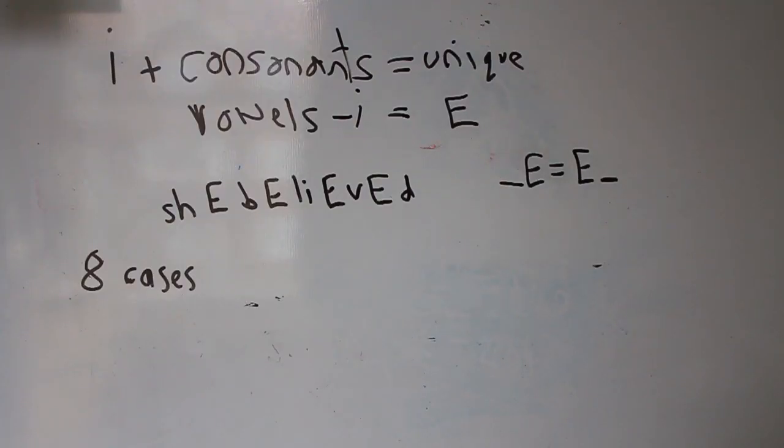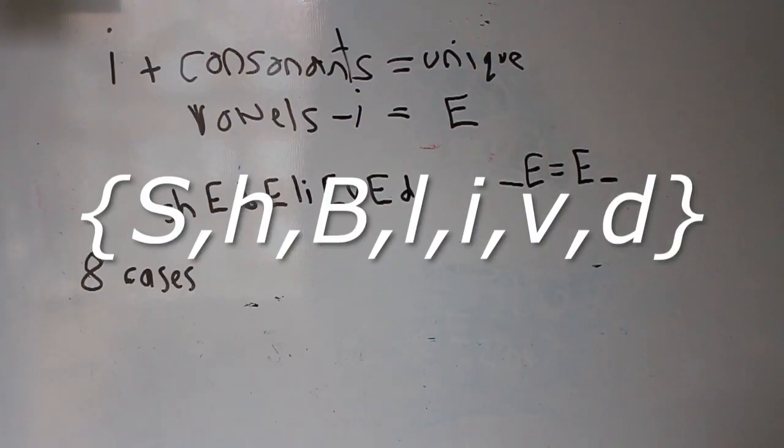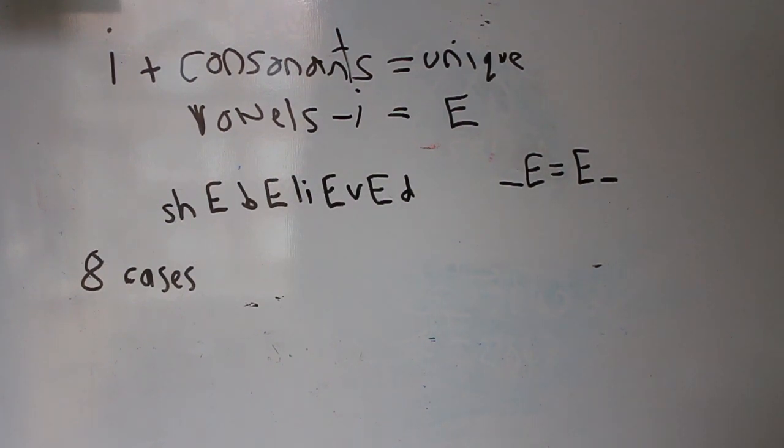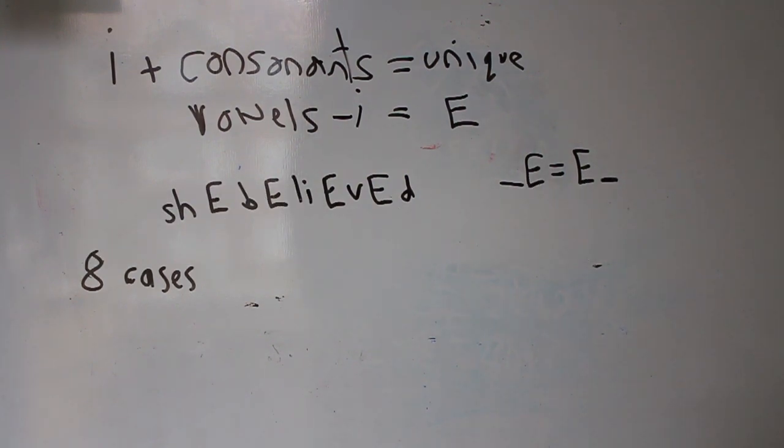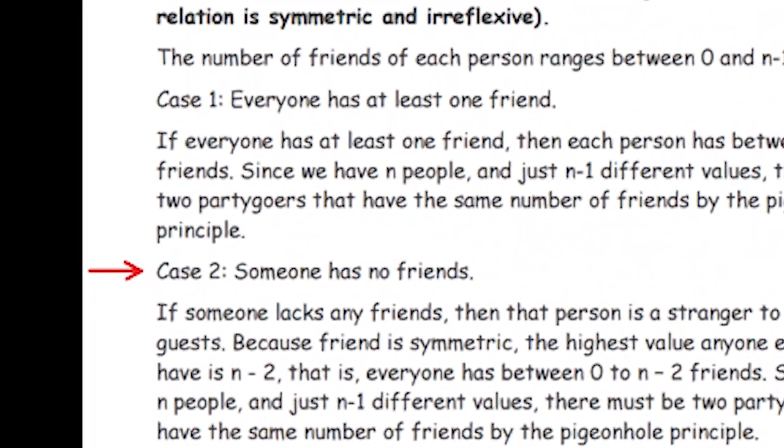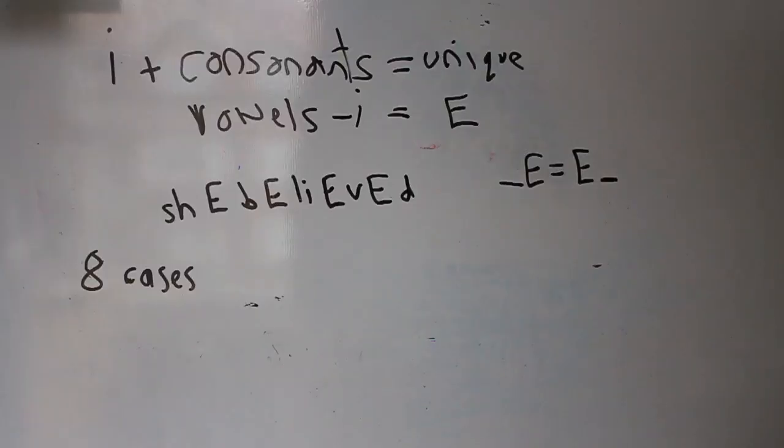First off, all the consonants plus the letter i are unique. None of them come up twice. All the vowels not including i are e. And they come up four times. Underscore e equals e underscore basically means that it doesn't matter which e we're including if there's one e and no letters in between them. So if we get rid of b and we have the first e, that's the same as having the second e. It makes no difference. I've used that fact to split this problem into eight cases, which is always handy when you're doing a maths problem. Split it into a number of cases that you can just work through. Let's work through them now.